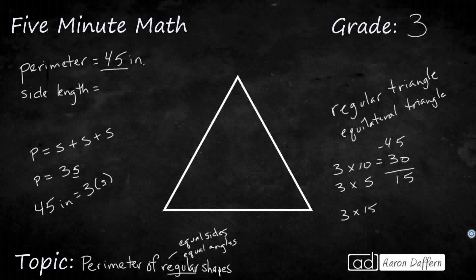Let's double check: 15 times 3, or we can do 15 plus 15 plus 15 — it's all going to work out the same. That is going to be 45. So my side length is going to be 15 inches, because 15 times 3 makes 45.